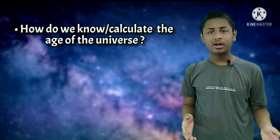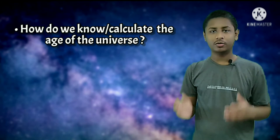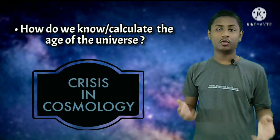Hello everyone. The age of the universe is 13.8 billion years, and how do we know that? And for that matter, how do we actually calculate the age of the universe? This is what we are talking about today, plus an emerging disagreement between theory and measurement that has led us to a crisis in cosmology, so let's start.